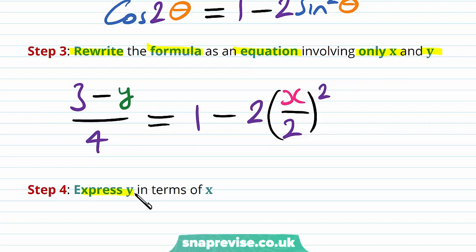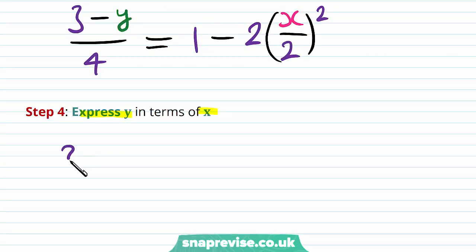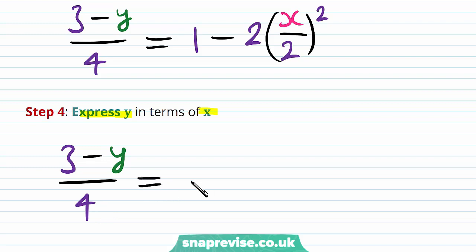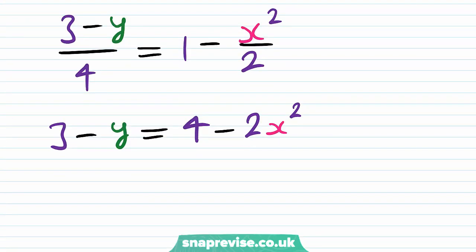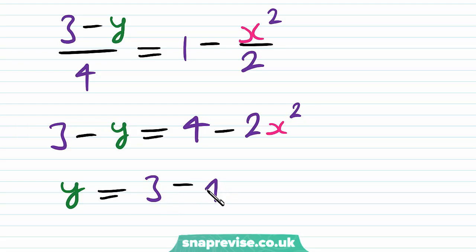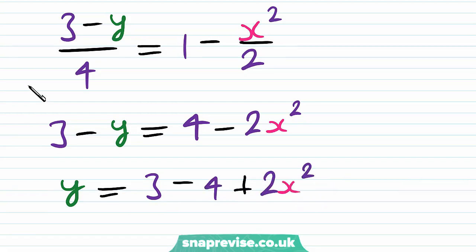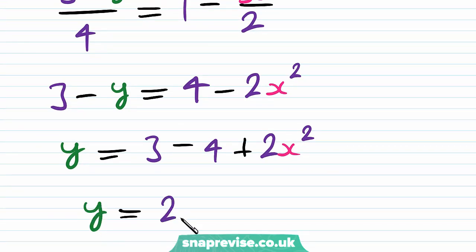Our fourth step is to express y in terms of x. The left hand side is 3 minus y over 4, and the right hand side simplifies by expanding the square to 1 minus x squared over 2. Multiplying both sides by 4, we get 3 minus y equals 4 minus 2x squared. Rearranging, we get y equals 2x squared minus 1. This is our equation for y in terms of x.